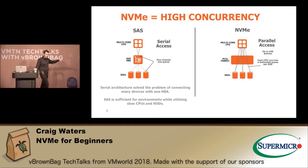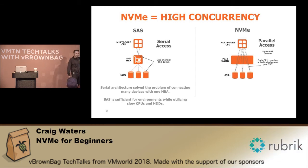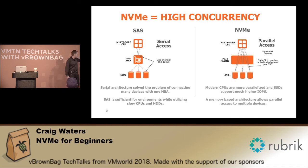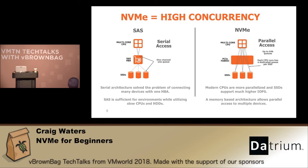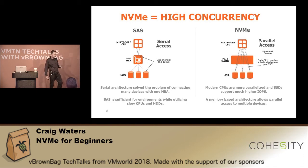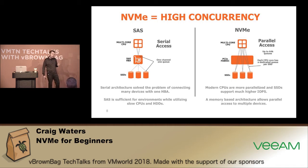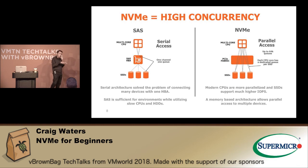I wanted to show the comparison between a traditional storage architecture and what NVMe provides. The challenge with SATA is you have a single queue — one channel and one queue for all those SSDs to share — and that's where you see the bottleneck. With NVMe, from an SSD perspective, you actually have a direct memory mapping from the core of a CPU all the way through to the NAND flash chips on the SSD itself. That direct one-to-one mapping means you can parallelize IO across all those SSDs simultaneously, better utilizing the cores on your processors to drive IO in your infrastructure.